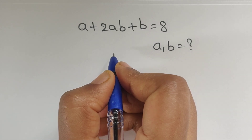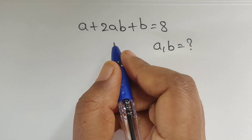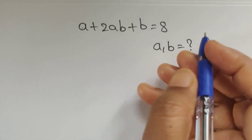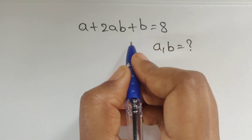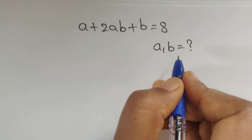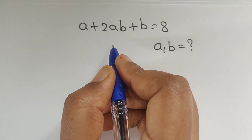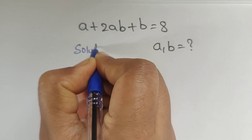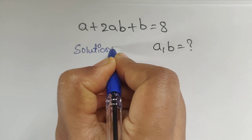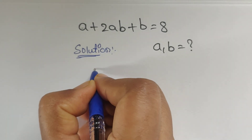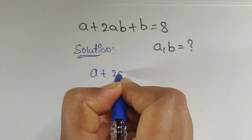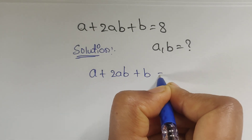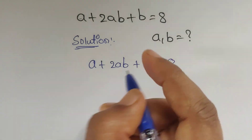Hello everyone, welcome back to our channel. Here we have one question: a plus 2ab plus b equals 8. In this problem we have to find the values of a and b. Let's see the solution. We have given a plus 2ab plus b equals 8.